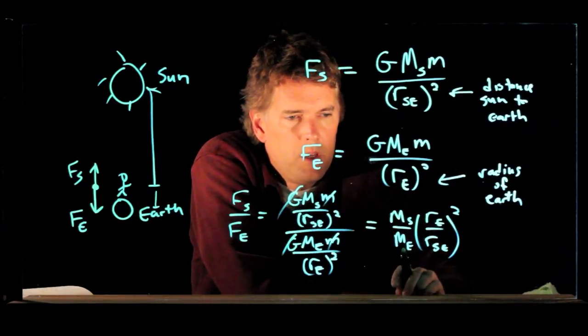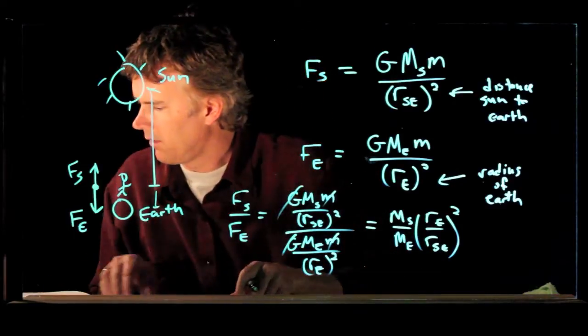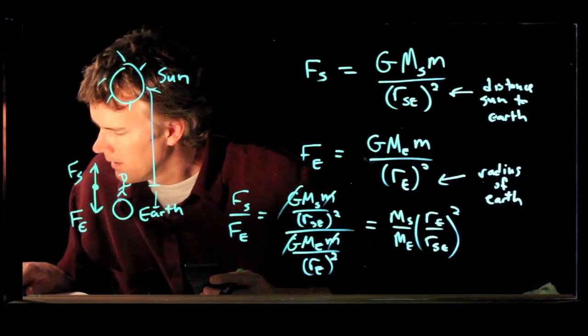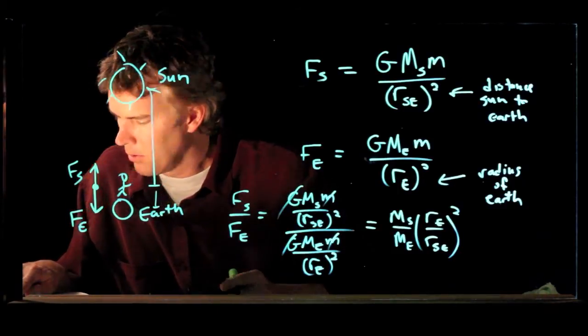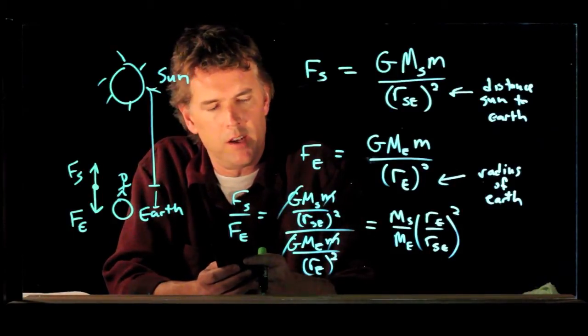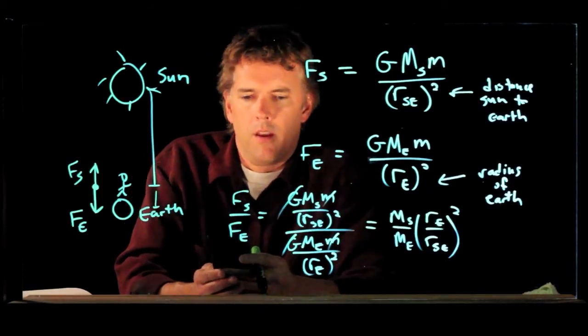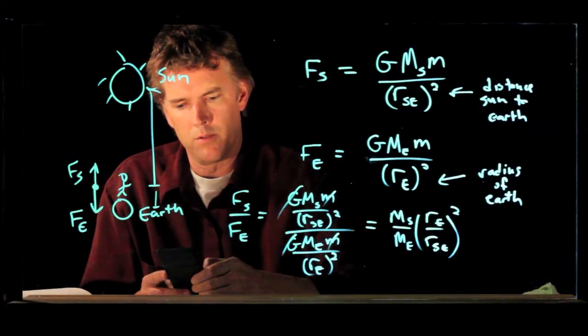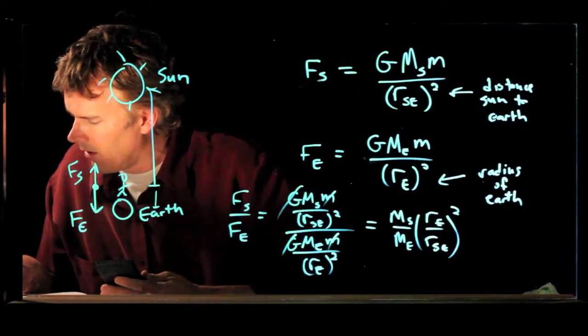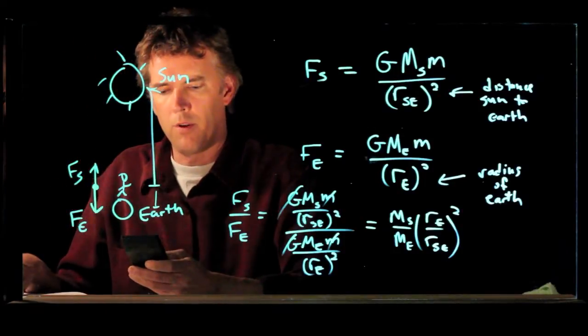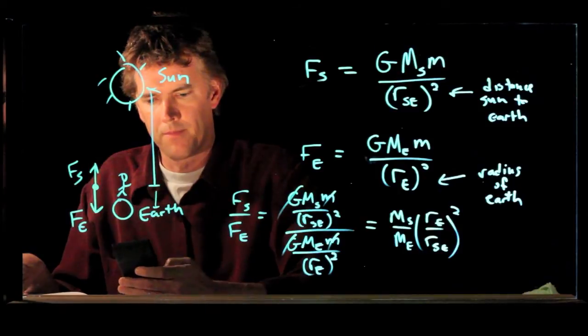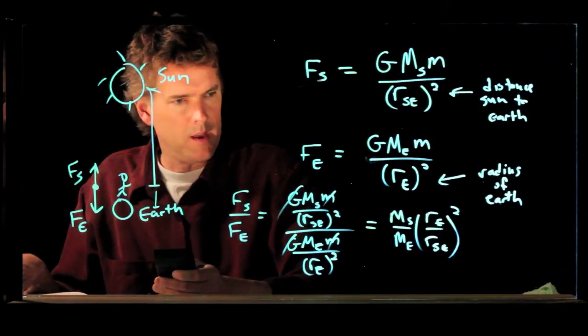And those numbers we can look up. Okay, so the radius of the earth is 6.37 times 10 to the 6 meters. We are going to divide that by the distance from the sun to the earth, which is 1.5 times 10 to the 11 meters. And now we square that.